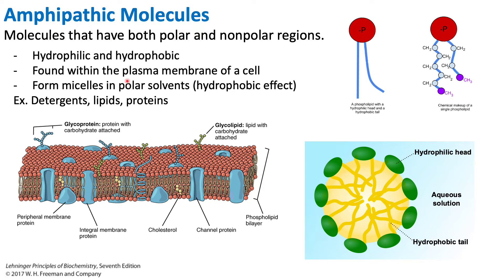Amphipathic molecules are also important when we talk about the formation of micelles and the hydrophobic effect. If there is an amphipathic molecule in a polar solvent, the polar head groups will come to the outside and the hydrophobic part will go towards the interior. In this way, amphipathic molecules are able to form micelles in water to create a more stable environment, because the hydrophobic tail does not want to interact with the polar solvent — only the hydrophilic head is happy to interact with the aqueous solution.